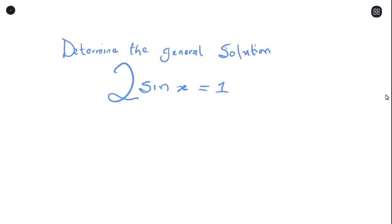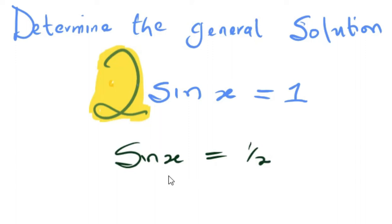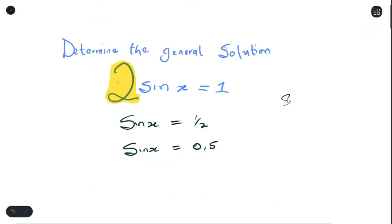The first example says: determine the general solution of 2sinx = 1. Whenever you get a question and have to find the general solution, the first thing you have to do is make sure your trig ratio has no coefficient. We move the 2 to the right hand side, giving us sinx = 1/2, or sinx = 0.5.